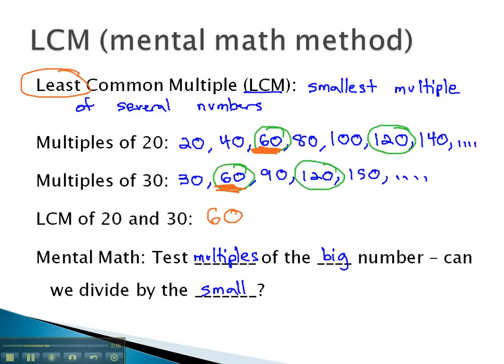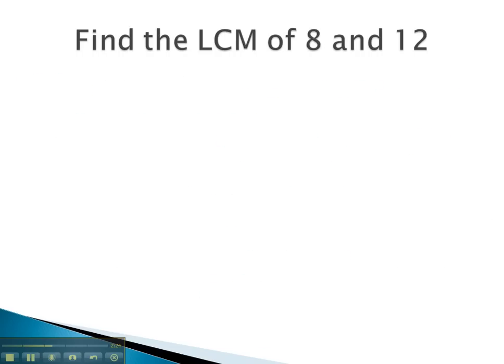So let's take a look at some examples where we find the least common multiple of two numbers using mental math. This mental math process is really nice with smaller numbers that we can divide by and multiply with in our head.